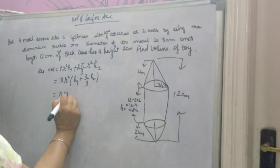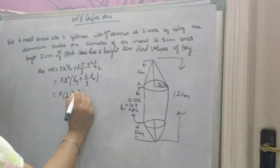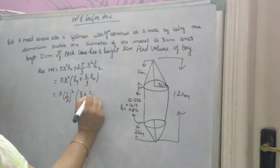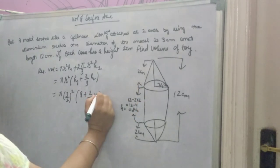Now, pi, r value is 3 by 2. 3 by 2 squared, h1. h1 is the height of the cylinder, that is 8, plus 2 by 3 into h2. h2 is the height of the cone, that is 2.